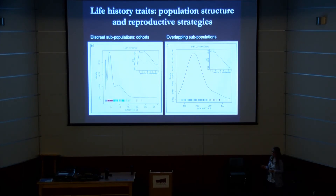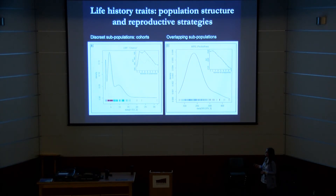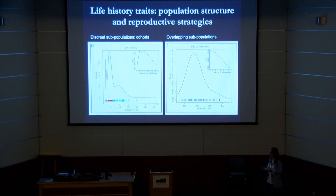We can compare these to the population structures seen in modern sessile organisms. Where you get discrete populations - three or four distinct groups - that would represent pulsed reproduction, such as seasonal or sporadic release of propagules, or sporadic recruitment to the sediment. Or you can get more blurred population structures.